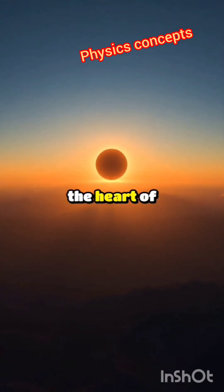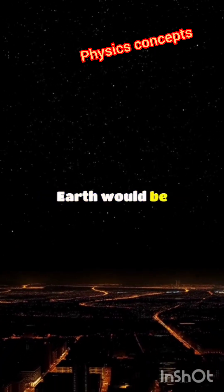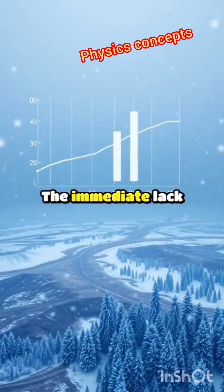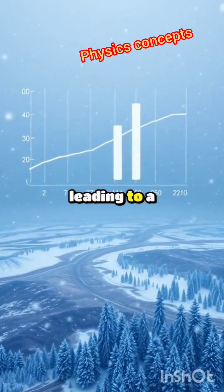Imagine the sun, the heart of our solar system, suddenly disappearing. Within minutes, the earth would be plunged into darkness. The immediate lack of sunlight would cause temperatures to plummet drastically, leading to a frozen world.